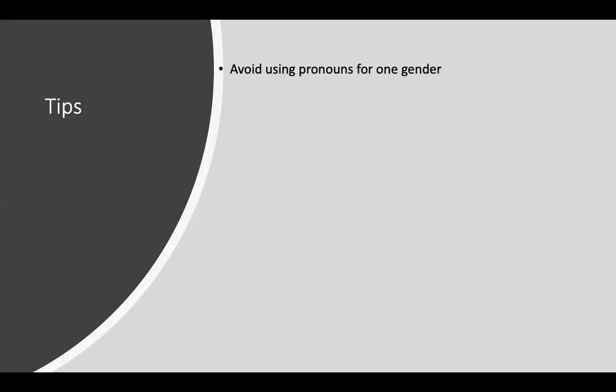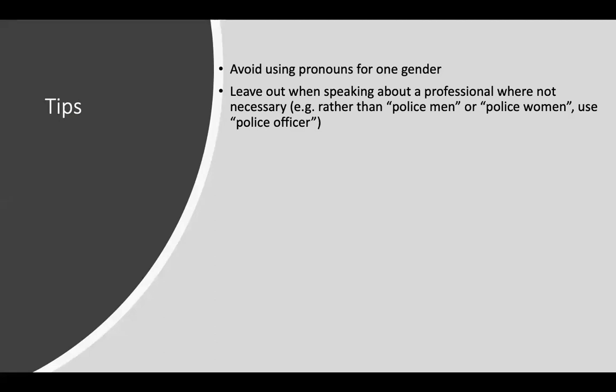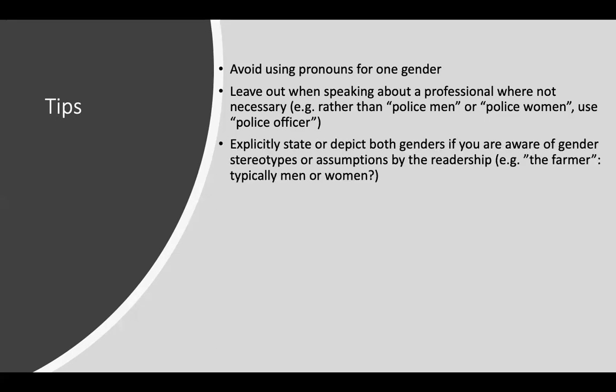To sum up, here are a few tips for using gender sensitive language in everyday communication. We should avoid using pronouns for one gender only, and leave out the gender of a professional when it is not necessary — so instead of saying policeman or policewoman, we can use the neutral form police officer. On the other hand, it is good to explicitly state or show both genders if there are gender stereotypes we want to make the reader aware of, or if our readership has certain assumptions — for example, 'the farmer' is typically understood as male, so highlighting female and male farmers helps people feel included.